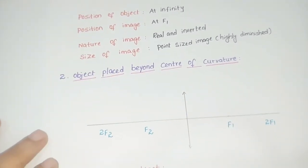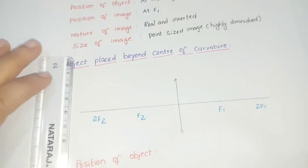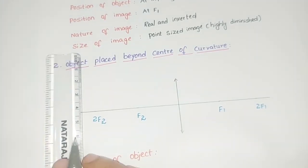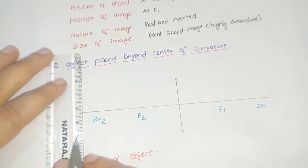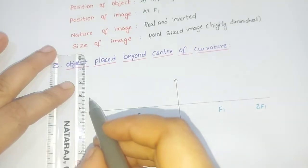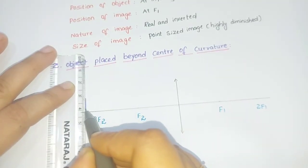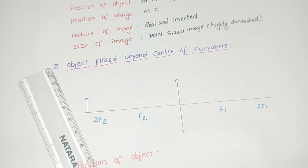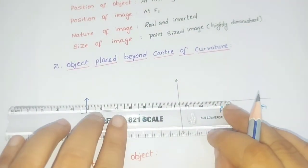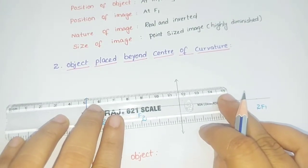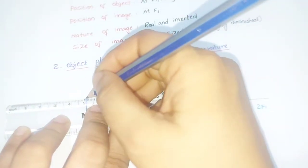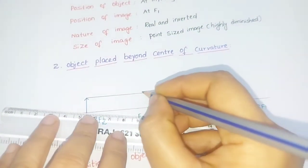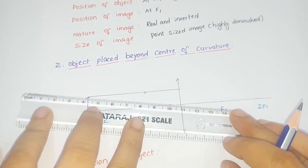Now we go to the second situation: the object placed beyond the center of curvature. Here an object is placed beyond the center of curvature. One point to remember is that the size of the object should not be more than half of the lens. For the ray diagrams, we take two light rays — the first one passing parallel to the principal axis, and the second one passing through the optic center.